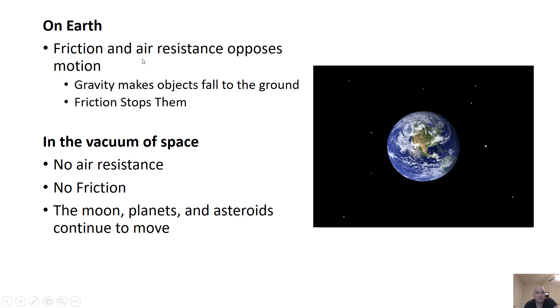When you think about Earth, friction and air resistance oppose motion. Gravity will make an object fall to the ground. And once it falls to the ground, you're going to have objects rubbing against each other. So there will be these forces until the point where it stops.